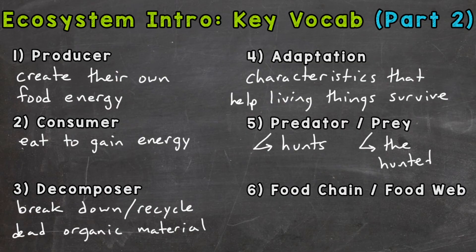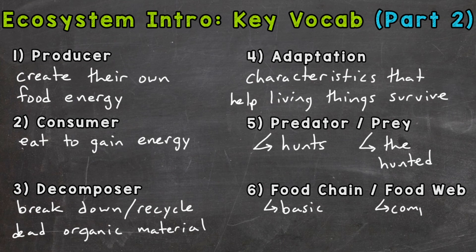And lastly, we have food chain and food web. A food chain is a basic diagram showing how energy moves through an ecosystem, and it shows only one path. A food web includes all of the food chains within an ecosystem, showing all of the connections and how energy is transferred. So there are many paths within a food web.